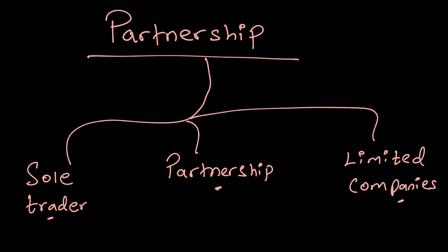A partnership can be an entity managed between 2 to 20 partners. A partnership is formed when partners gather together to form a business with the intention of making a profit. That's the aim of a partnership — it lies directly in the middle between sole trader and limited companies.